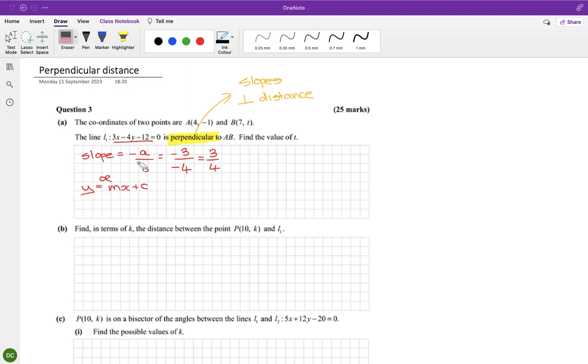Now if my line is perpendicular, then I need to flip it and change the sign. So the slope of the other bit...